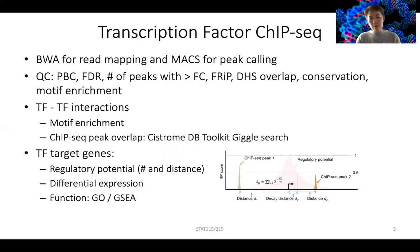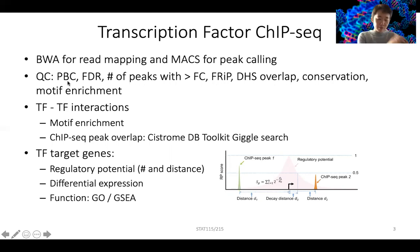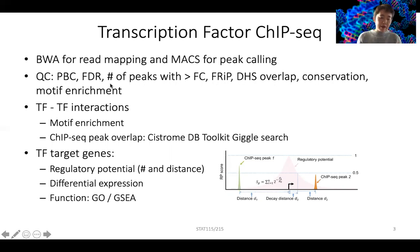We can use BWA for read mapping and MACS for peak calling. With ChIP-seq, you need to really check the quality because many high-profile papers have bad quality ChIP-seq data, mostly due to the availability of antibodies and the starting material of the cells. People look at PCR duplication rate — how many times you read the same reads over and over again. You can look at the FDR of all your peak calls to make sure you're calling enough peaks compared to controls. You can also look at the total number of peaks with a certain fold change, because peaks with over five-fold enrichment plateau better with sequencing depth.